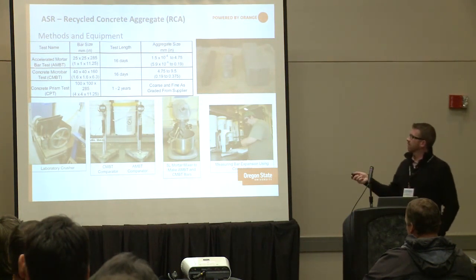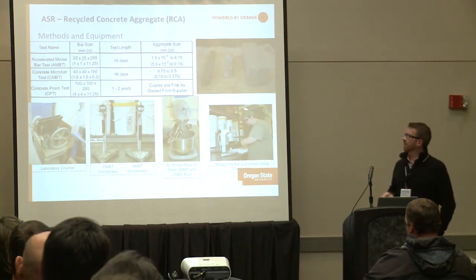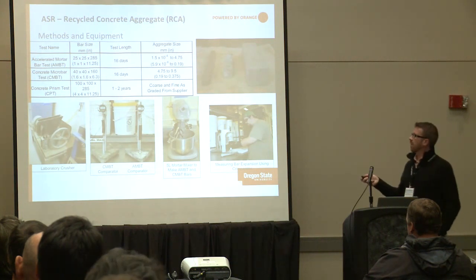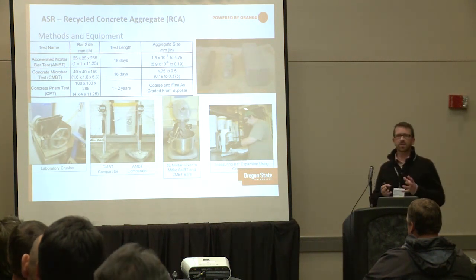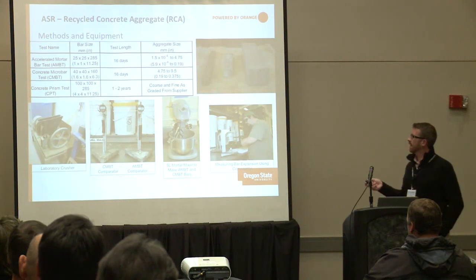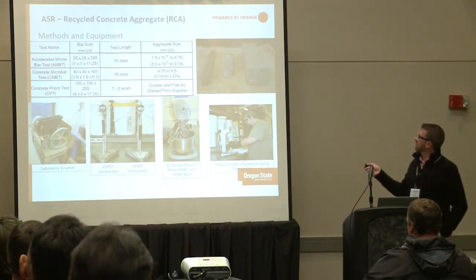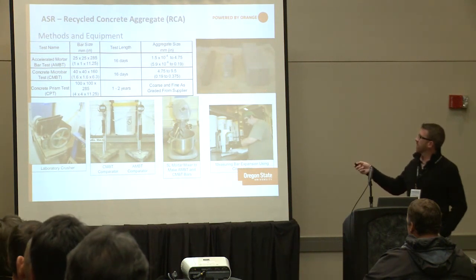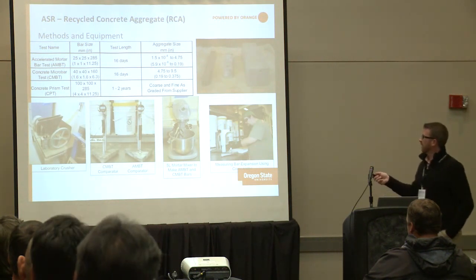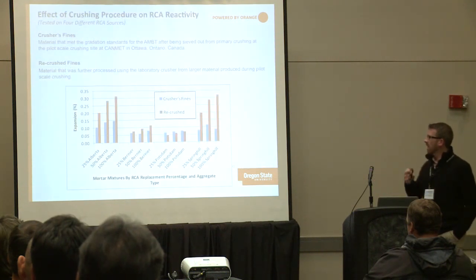The test methods we're using include the accelerated mortar bar test and a relatively new concrete micro bar test — a 1.6×1.6-inch cross-section specimen about 6.3 inches long. This allows us to use slightly larger aggregate sizes while still using accelerated test conditions, rather than being restricted to all fine aggregate. We're benchmarking this to concrete prism tests. The C1260 bar is the smallest, the concrete micro bar is slightly squatter, and the concrete prism is the largest at 3×3×11.25 inches.